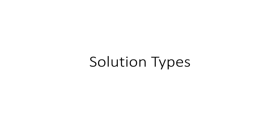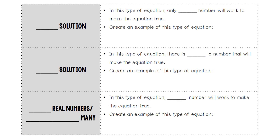This instructional video is on solving equations with different solution types. There are three categories that we're going to be classifying our equations into. The first category is called a one solution. In this type of equation, only one number will work to make the equation true. All of the equations that we have solved so far have been one solution equations.